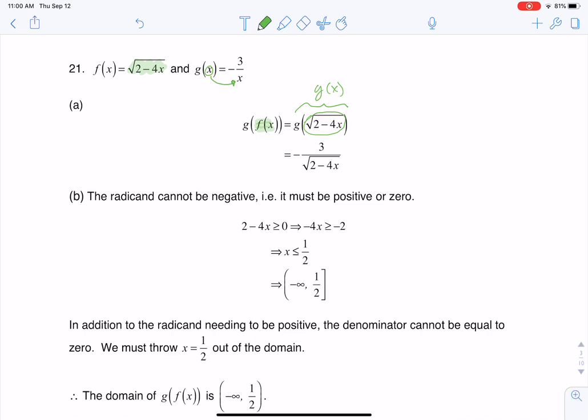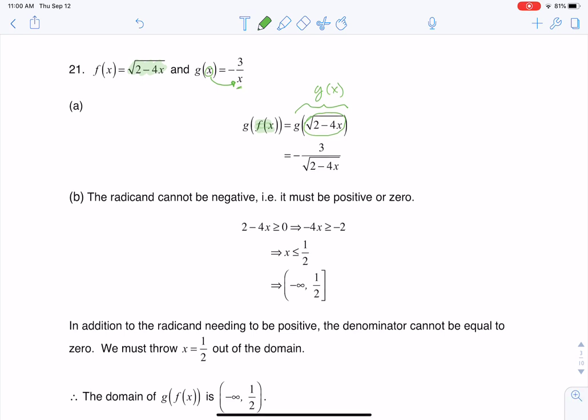In this fraction negative 3 over, again, whatever was in that parentheses. So if the square root of 2 minus 4x is in my parentheses, I'm going to put that in my denominator. So that's where I'm getting g of f of x.